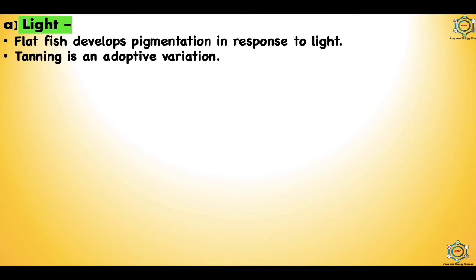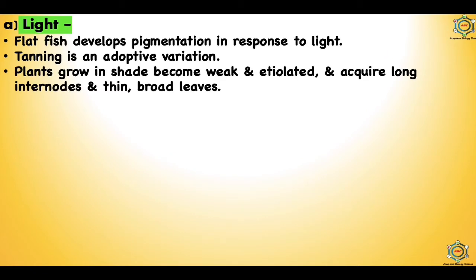Tanning is an adaptive response because strong sunlight tans the human skin by increasing the dark pigment melanin in the epidermal cells, and melanin protects the underlying cells by absorbing the ultraviolet rays of the sun. Plants growing in shade become weak, etiolated, and acquire long internodes and thin broad leaves. In full sun, plants produce strong mechanical tissue and small thick leaves, and the palisade parenchyma may become many layers in strong light.